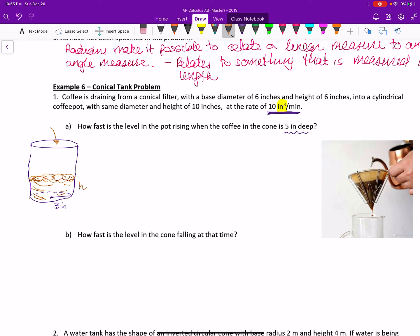And the volume is getting bigger. There's more and more in there. So I know that my dV/dt is going to be positive, and it's positive 10 cubic inches per minute, because the volume inside of the coffee pot is getting bigger. We're getting more coffee in there, which is the goal anyways. So let's organize our thinking a little bit.